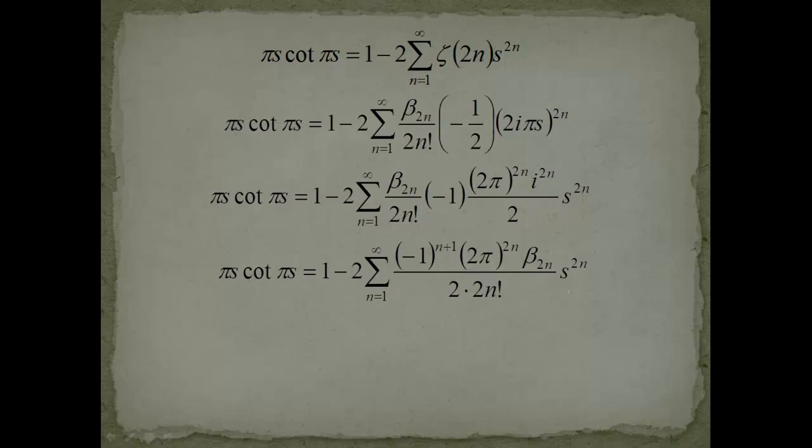This is beta 2n and this is s to the 2n. Now what we can do at this point is pretty simple—we can just compare these bodies. This is comparing the coefficients in a power series.